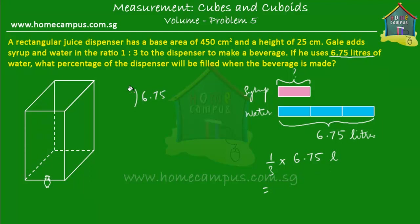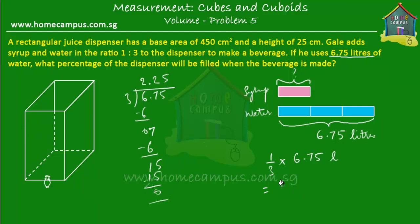That is equal to 6.75 divided by 3. One third of 6.75 means 6.75 divided by 3. That's equal to 2 — bring down the 7, 3 goes into 7 twice and leaves a remainder of 1, then bring down the 5 — so this is 2.25 litres. A third of 6.75 litres is 2.25 litres. So the quantity of syrup used was 2.25 litres. We know that there was 2.25 litres of syrup used and 6.75 litres of water used.